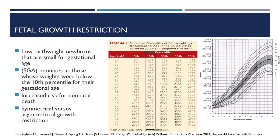Also, on the right side, we have a graph that depicts the 10th percentile of fetal gestational weight according to gestational age. For example, if we have a mother at the 34th week age of gestation, the 10th percentile of fetal weight will be 1,950 grams. So if sonographically the fetus weighs less than this, then that fetus is considered to have fetal growth restriction.